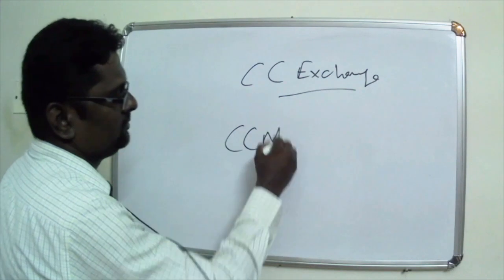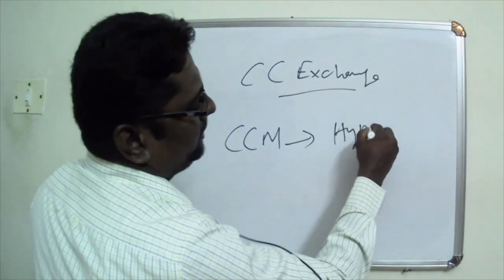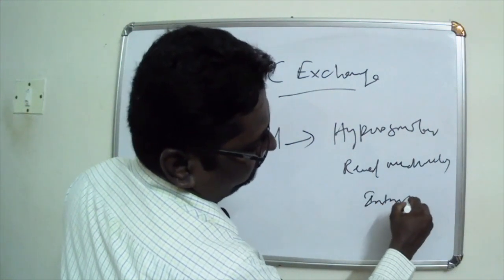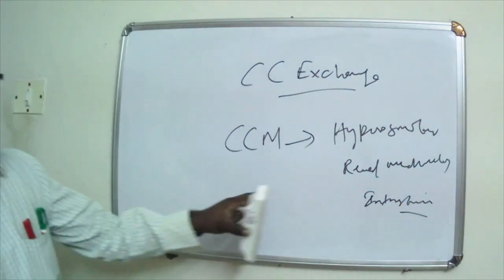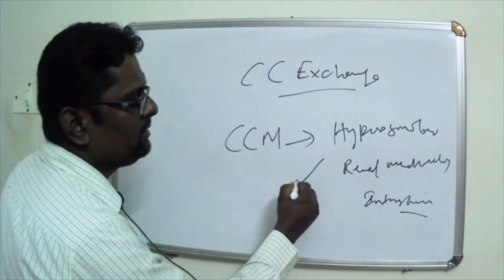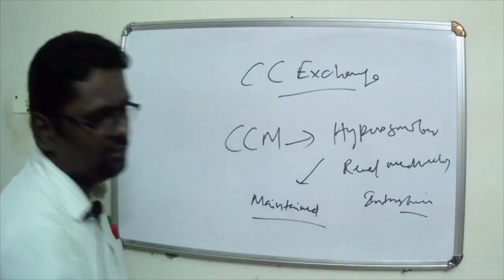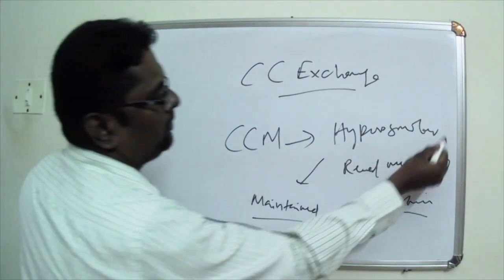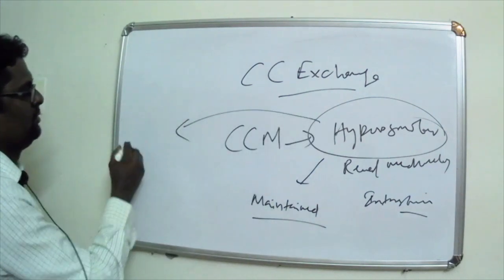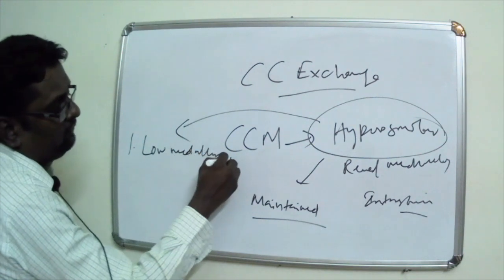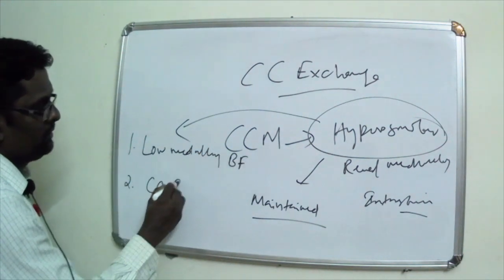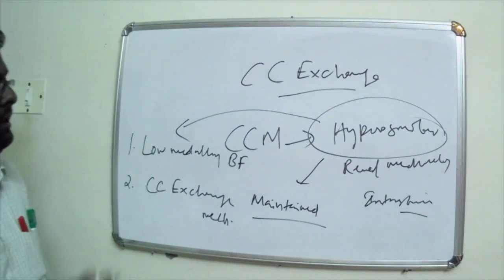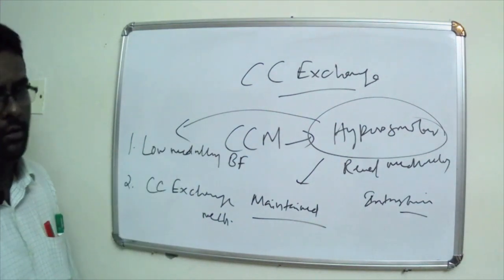The counter-current multiplication helped in creating hyperosmolar renal medullary interstitium. Once this is created, it has to be maintained. If it is not maintained, then a concentrated urine cannot be formed by the kidney. This hyperosmolarity is maintained by two factors: one is low medullary blood flow, and another one is counter-current exchange mechanism.